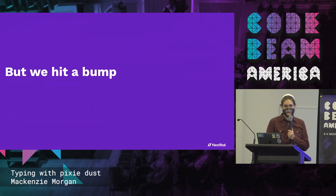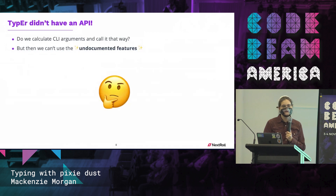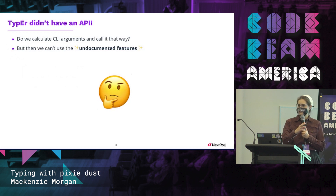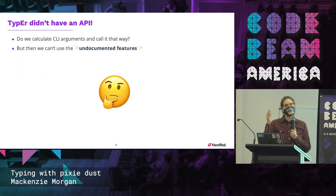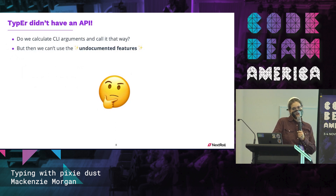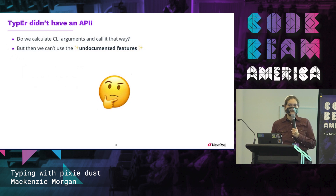We hit a bump, of course. Turns out Typer didn't have an API — there was no way to call functions into it at all. So we thought: do we get our CLI options, get the rebar config options, decide between them what CLI options to pass, and just construct the CLI options? Kind of messy, kind of boring. And also we couldn't use the undocumented features we found in Typer's codebase that way.